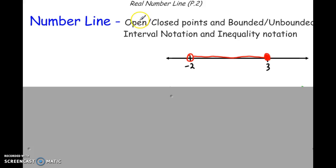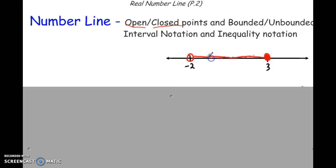Let's talk about the number line. Open circles look like this — an open circle — and a closed circle looks like this. A closed circle means it's inclusive. So in this solution area, 3 is a solution and negative 2 is not a solution. There are infinitely many solutions between 3 and negative 2, all the way up to about negative 1.99999, but not including negative 2.